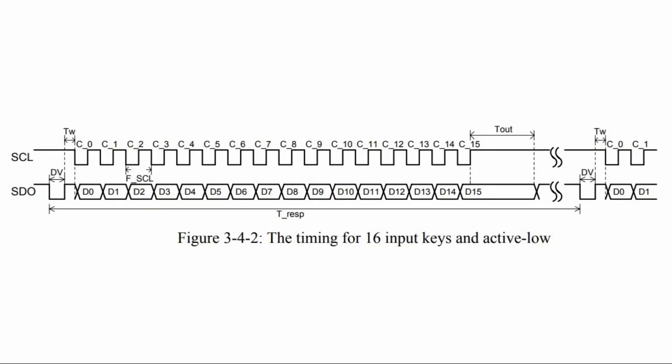To understand how we can read key presses from the module serially, we need to look at the timing diagram of the TTP229 IC taken from the datasheet. We need 16 clock pulses. The first clock pulse will be associated with key number 1, the second clock pulse with the second key, and the last clock pulse will be for key 16.